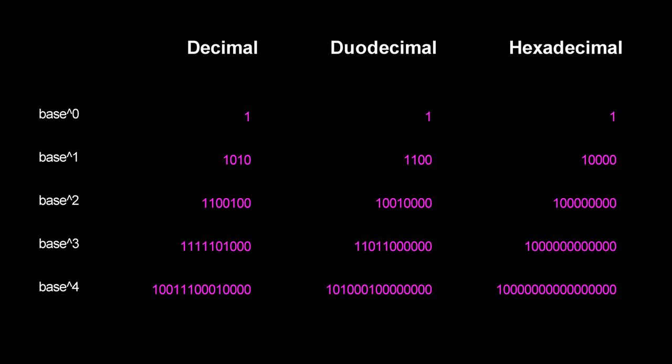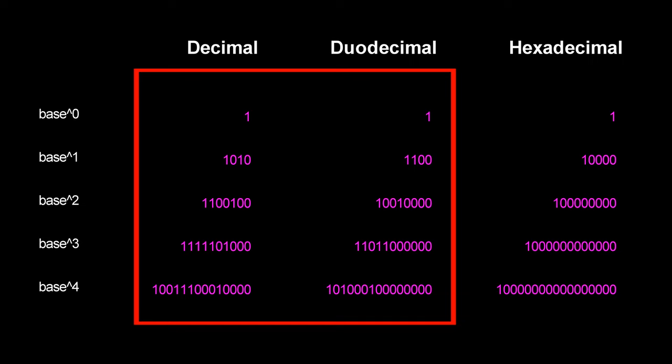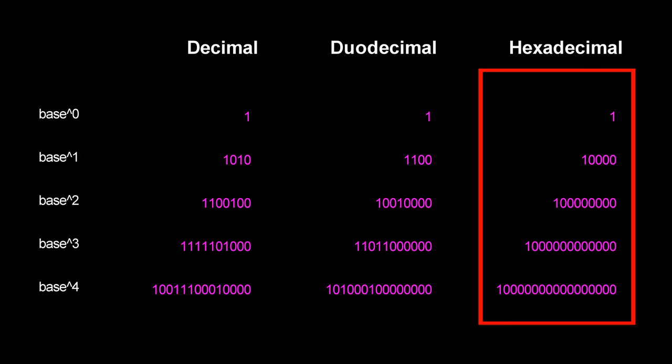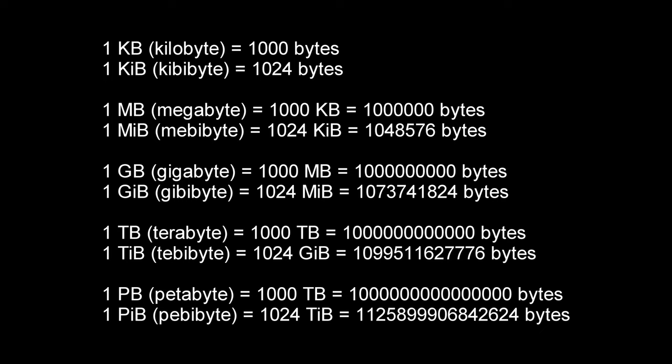Here we have some powers of each base written in binary. In decimal and duodecimal the binary numbers are a messy combination of ones and zeros. In hexadecimal they are all just a one followed by zeros. This is because hexadecimal translates well to binary.